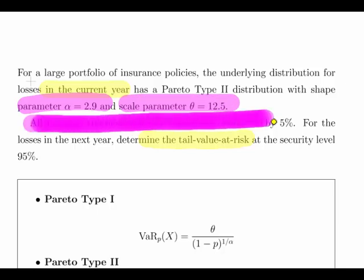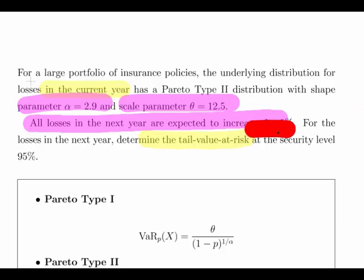All losses in the next year are expected to increase by 5 percent. For the losses in the next year, determine the tail value at risk at the security level of 95 percent.